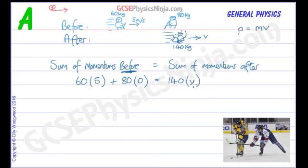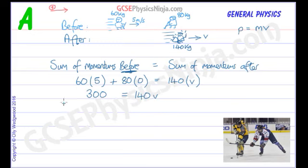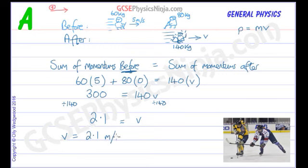Now we've got an equation which we can solve. Let's expand and simplify: 300, and 80 times zero is zero, equals 140 times V. Let's divide both sides by 140, and we get 2.1 equals V. So turning that around: V equals 2.1 meters per second.